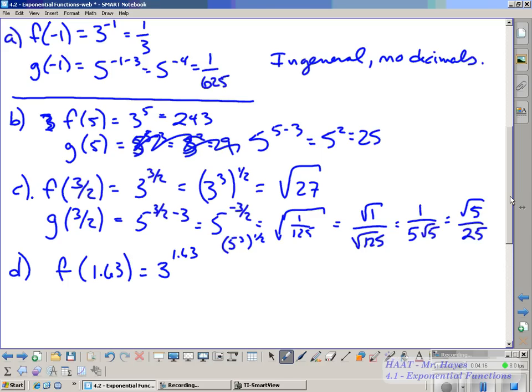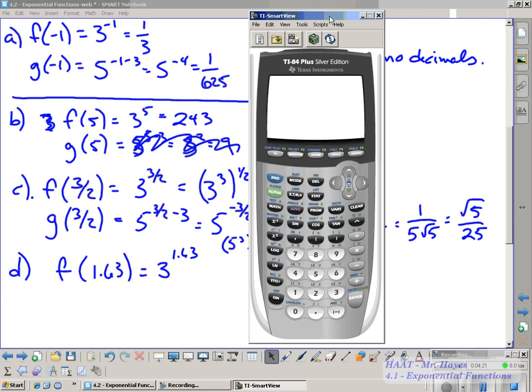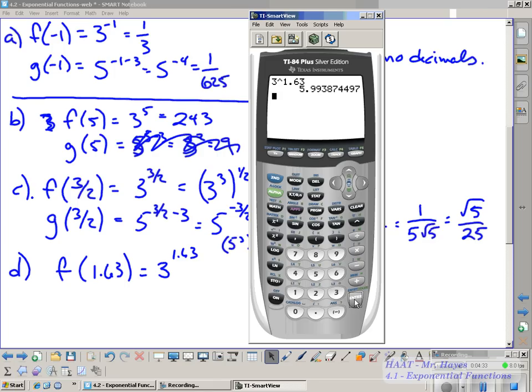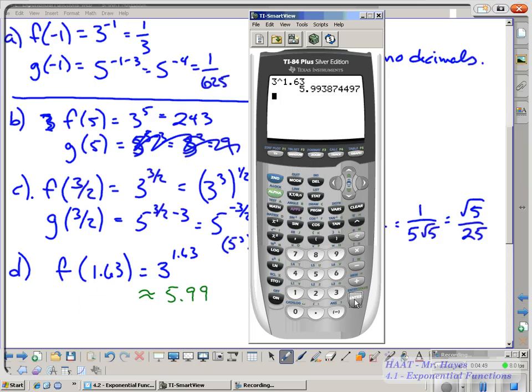So for something like in D, what you're just going to do is you're going to take out your calculator and you're just going to simply type it in. So this is going to be 3 to the power of 1.63. And you're going to get 5.99. And they will generally tell you where you're going to go. Always put approximately equal because this is definitely not equal to 5.99. So go through and do that.